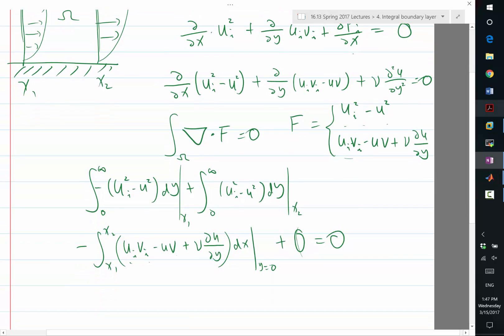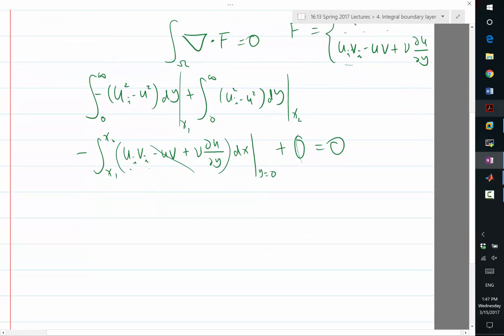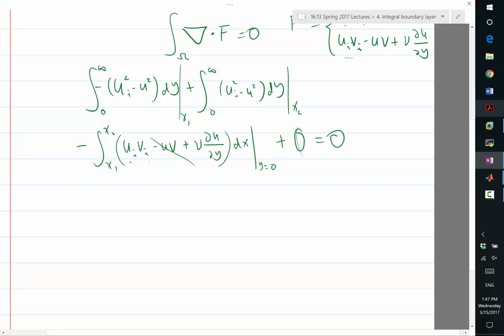And last time in the mass conservation, we eliminated some of the terms even at y equal to zero by the boundary condition of the viscous fluid. Can we do the same thing here? Which term becomes zero? The minus uv term becomes zero because at y equal to zero, both u and v are equal to zero. So now we also get something similar. As a result of this derivation, my integral defect of momentum, taking difference between x1 and x2, is equal to the integral over x1 and x2 on the wall of ui vi plus nu times du dy, which is basically the wall shear stress tau. Where tau is defined as nu times partial u partial y at y equal to zero.